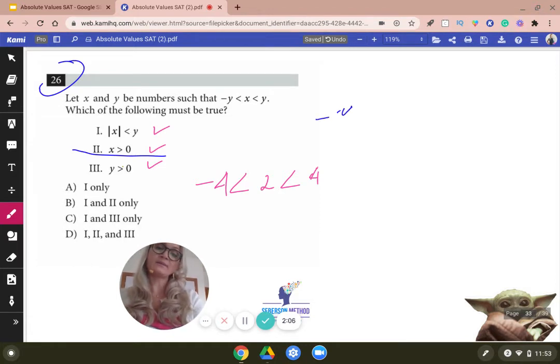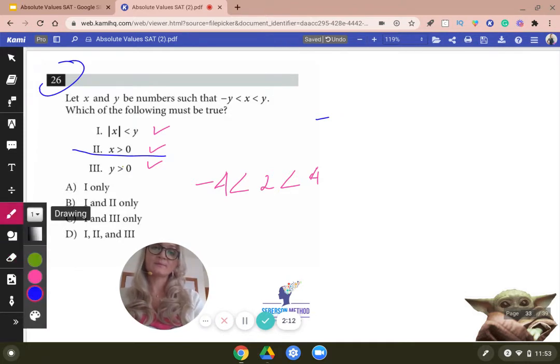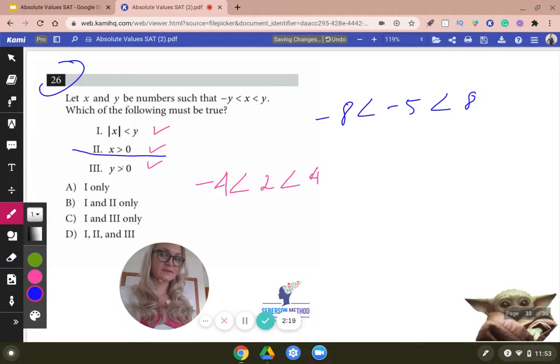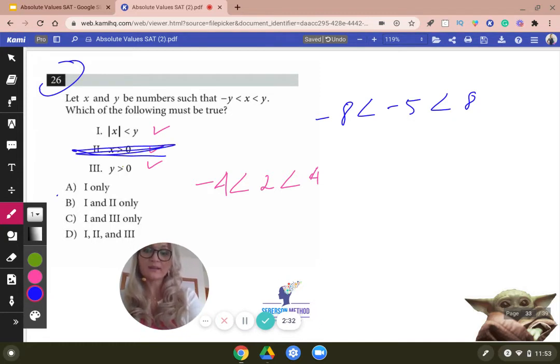Negative Y could be, let's say, negative eight, then negative five, then eight. Do you see that works? It does. Negative eight is less than negative five and negative five is less than eight. It works out. So two is absolutely wrong. So all of the answer choices that include two could be eliminated.